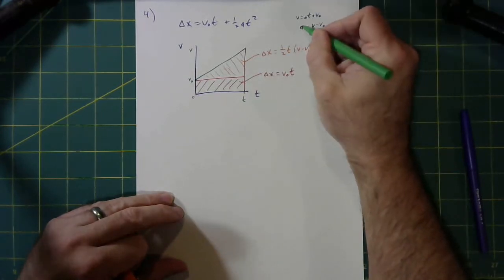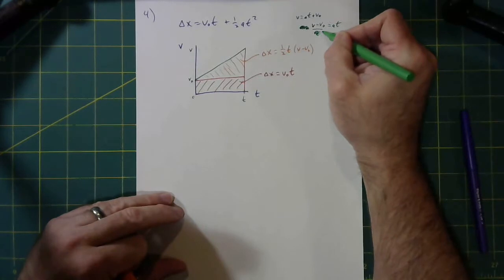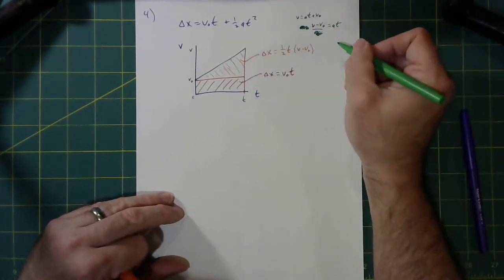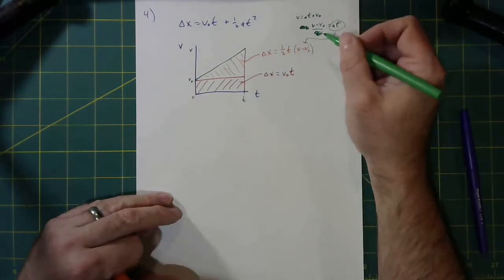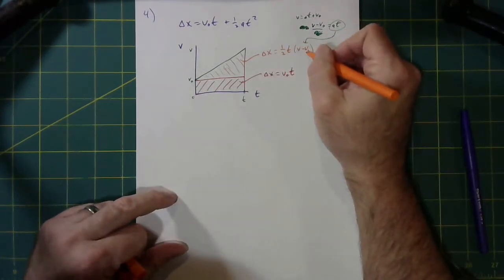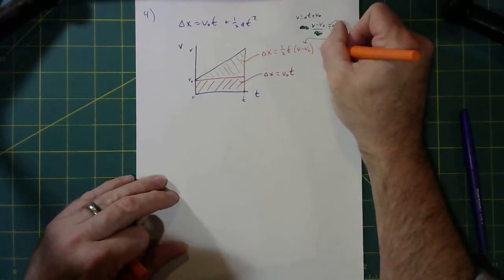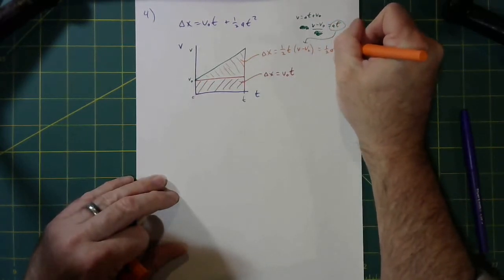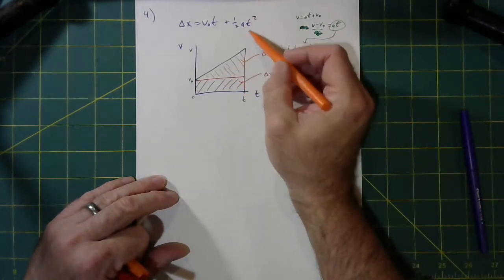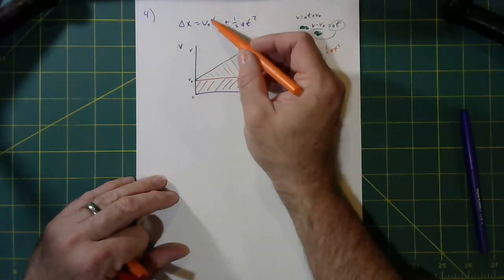Here, let's get rid of that. I can rearrange this to get that. So this bit here in parentheses is just at. So this would be one half t times a times t. Or if you'd like, one half at squared. And you say, aha, this triangle is the second term.